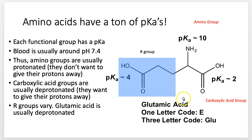The R groups are going to vary — that's where we'll get into amino acids. When we talk about proteins, this will help explain why some R groups are slightly more acidic. Why is glutamic acid called an acid? Because its R group has a pKa that's relatively low. Glutamic acid (Glu, code E) has a pKa of about 4 on its R group — that's pretty low — so it's more likely to give up that hydrogen than a more neutral amino acid like alanine.